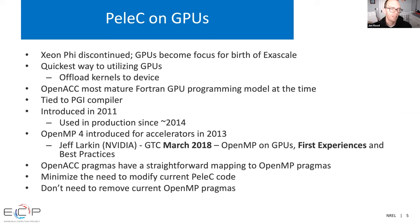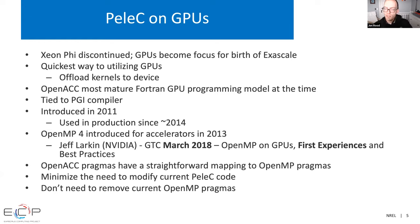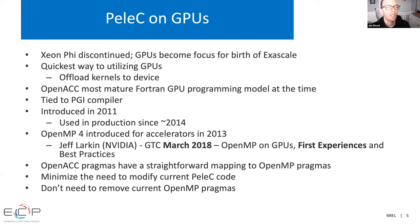Around 2017 the Xeon Phi was discontinued, and GPUs became the focus for exascale. Working under the Exascale Computing Project, we needed the quickest way to utilize GPUs by offloading the kernels to device — we already had the kernels written. I felt OpenACC was the most mature Fortran GPU programming model at the time, and I had used it in other projects including Fortran weather models. OpenACC was introduced in 2011 and had been used in production — the COSMO model at MeteoSwiss was using it since around 2014.